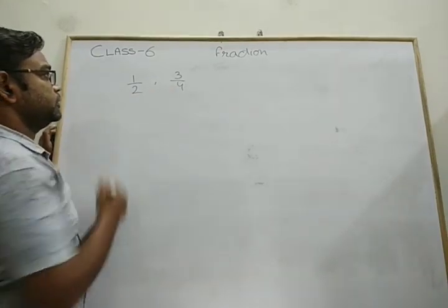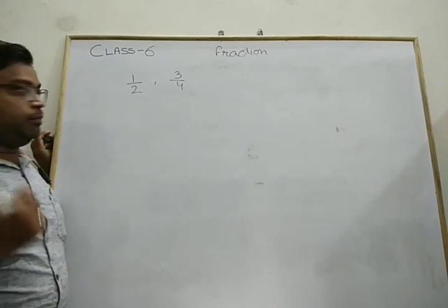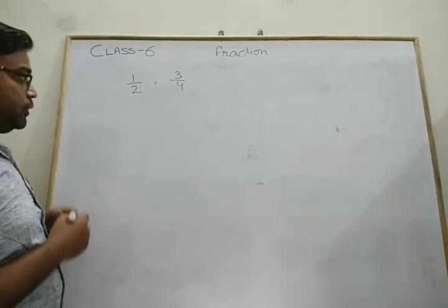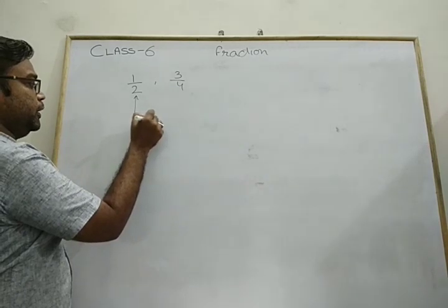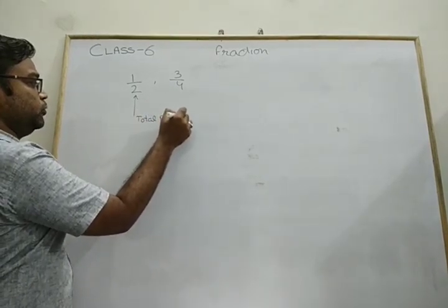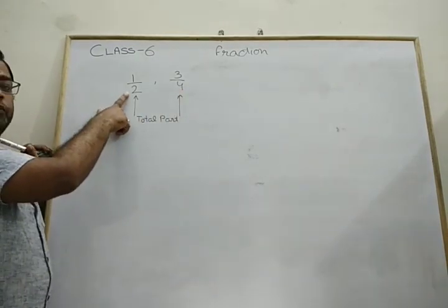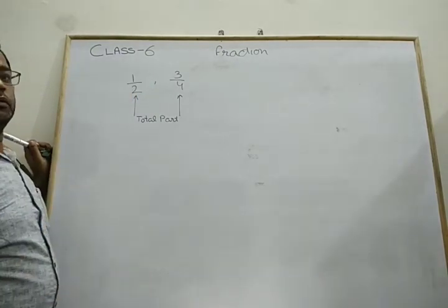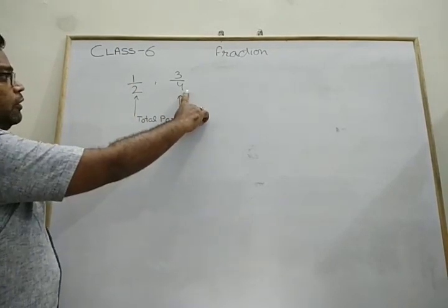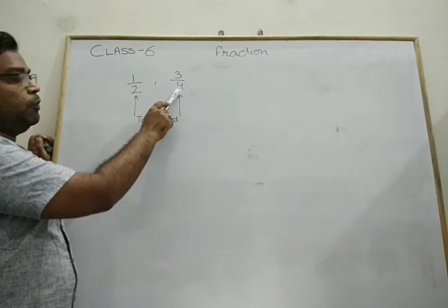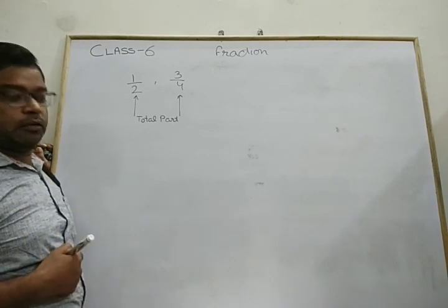What does it mean? Take 1/2 as an example — it means we have a total of two equal parts, and out of those two, we need one part. In 3/4, we have four parts, and out of four, we need three parts. So this is an example of a fraction.